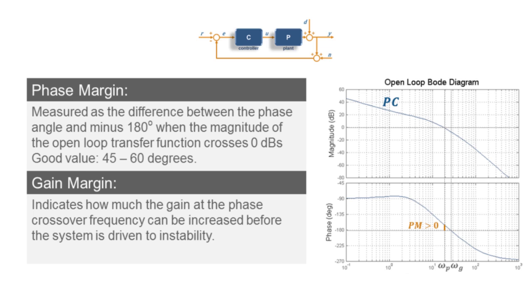The phase margin is measured as the difference between the phase trace and the minus 180 degree line at the frequency where the magnitude crosses 0 dBs. For stability, we need the phase margin to be greater than 0, but usually we will want to keep it above 45 degrees. A phase margin of 60 degrees is usually recommended for relatively smooth, well-damped system behavior.